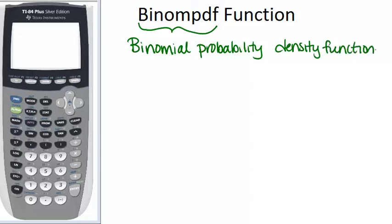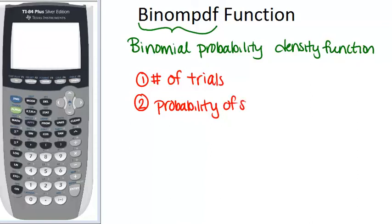So on your calculator, this is a function because you can tell it the number of trials in your experiment, the probability of success, and how many successes you want, and it will tell you the probability of that happening. So in order to use this function, you need to know three things: the number of trials, the probability of success for each trial, and the number of successes that you want to know the probability for.